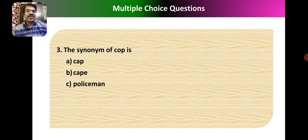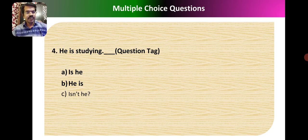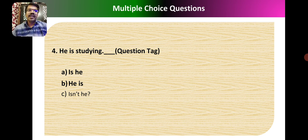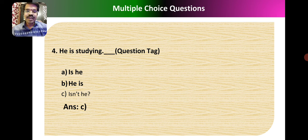Question 3: The synonym of 'cop' — the options are cap, cave, or policeman. The right answer is 'policeman.' Cop and policeman mean the same. Question 4: 'He is studying' — what question tag will you use? This is a positive statement, so it will have a negative question tag. The answer is 'isn't he?'